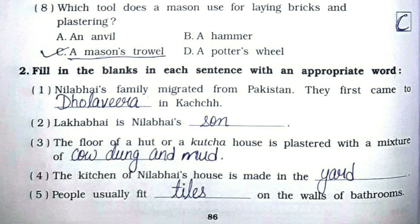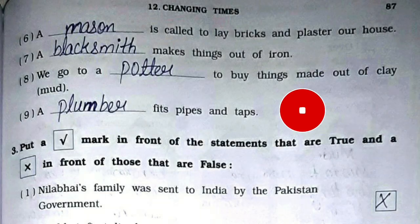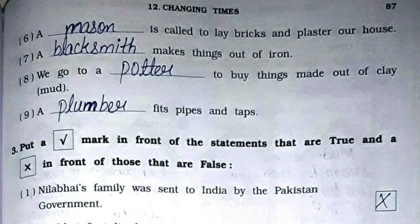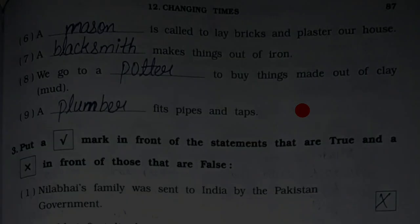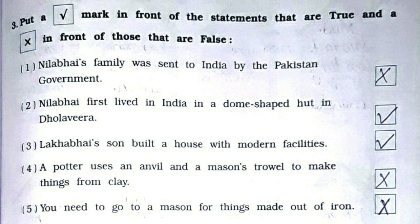Fourth: The kitchen of Neela Bhai's house is made in the yard. Fifth: People usually fit tiles on the walls of bathrooms. Sixth: A mason is called to lay bricks and plaster our house. Seventh: A blacksmith makes things out of iron. Eighth: We go to a potter to buy things made out of clay or mud. Ninth: A plumber fits pipes and taps.